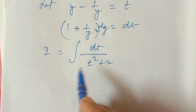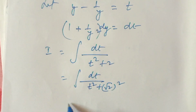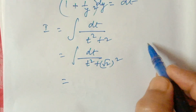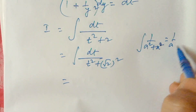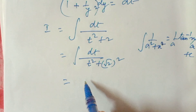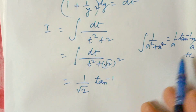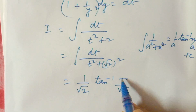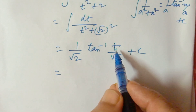Applying the formula with a equal to root 2, the result is 1 over root 2 times tan inverse t over root 2 plus c. Substituting back, t equals y minus 1 over y, and y equals tan x, so t equals tan x minus 1 over tan x.